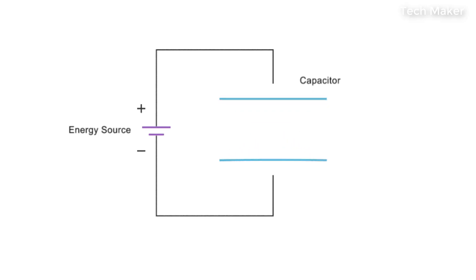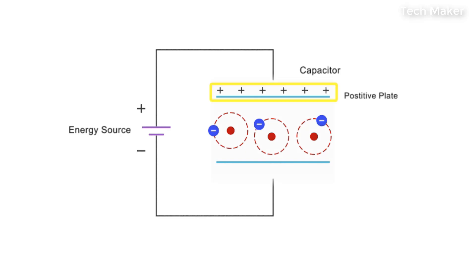Capacitors work to store energy by stretching the orbits of electrons in a dielectric compound between a positively charged plate and a negatively charged plate.